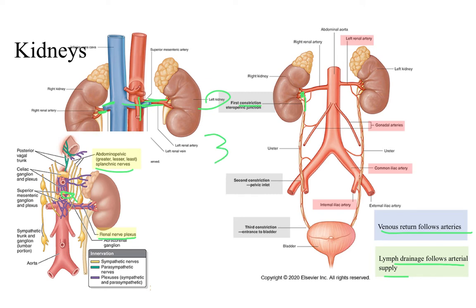As urine is collecting in the renal pelvis and traveling down the ureters, there are certain spots within the ureters where there are constrictions — three constrictions in total. The first constriction happens at the ureteropelvic junction, where the ureter and the renal pelvis come together. These are important because they could be spots where urine backs up, or where a kidney stone being passed can get stuck.